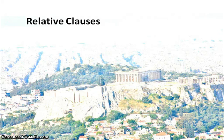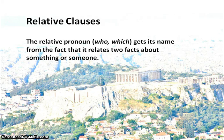This is a short video about relative clauses for Greek GCSE. The relative clause is introduced by the relative pronoun, which in English we translate as 'who' or 'which', and it gets its name from the fact that it relates to facts about something or someone — i.e. it gives us an extra bit of information about a noun in a sentence.